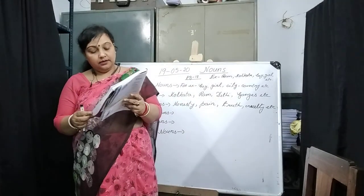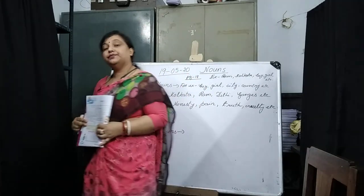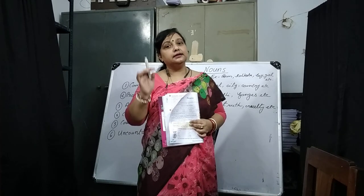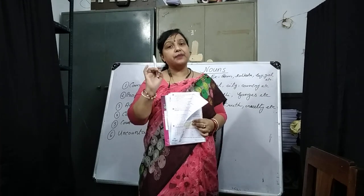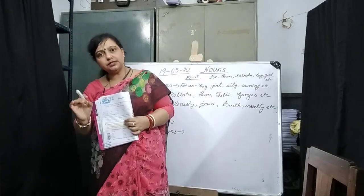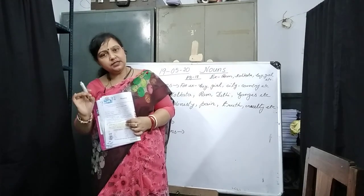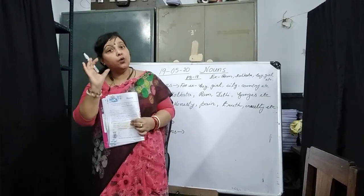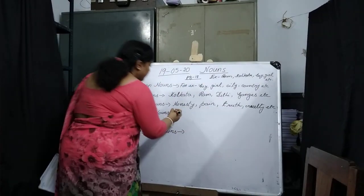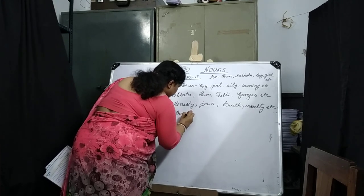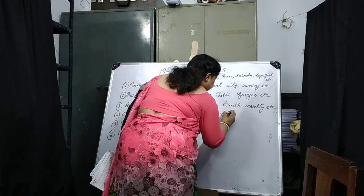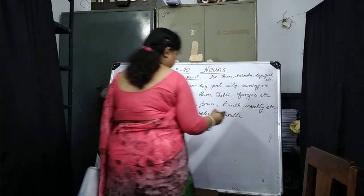Now, collective nouns. What are collective nouns? Collective nouns are the names of collections of persons, animals, or things, considered as one whole. For example: flock, fleet, bundle, army.